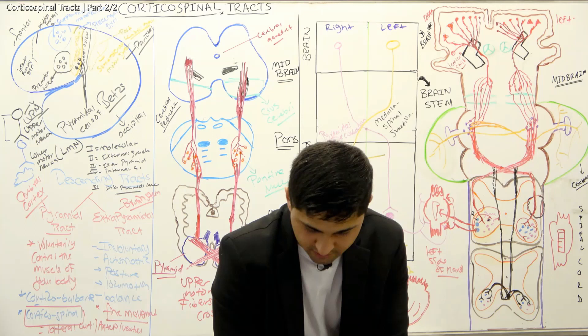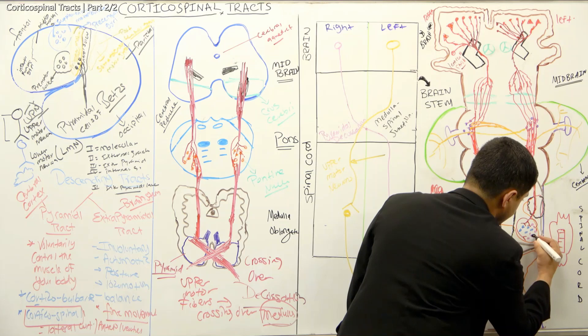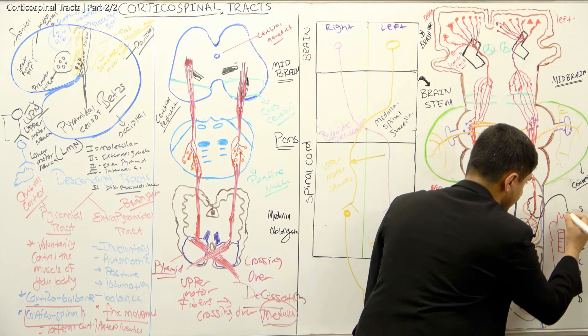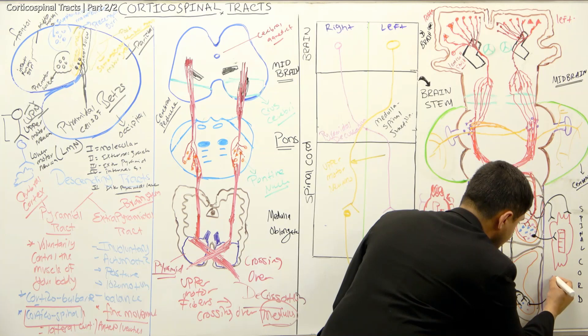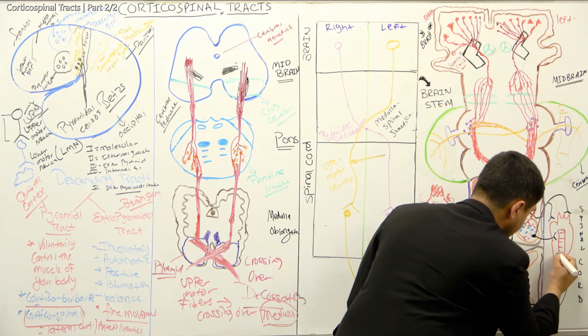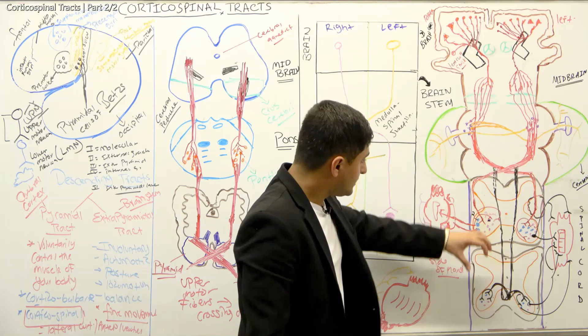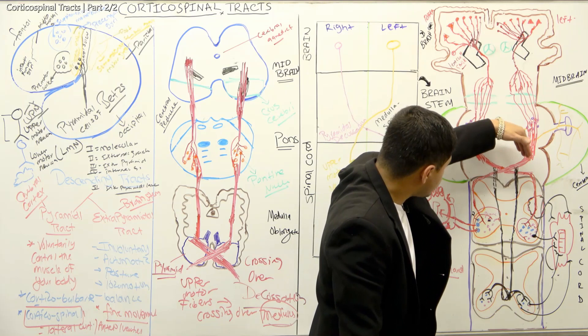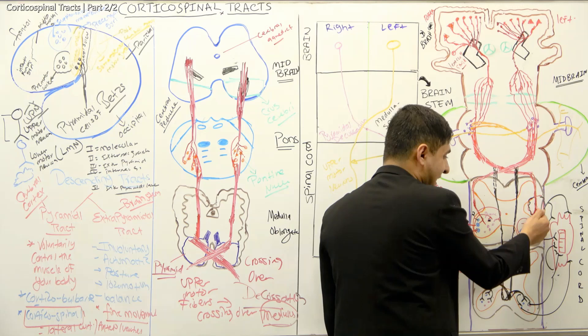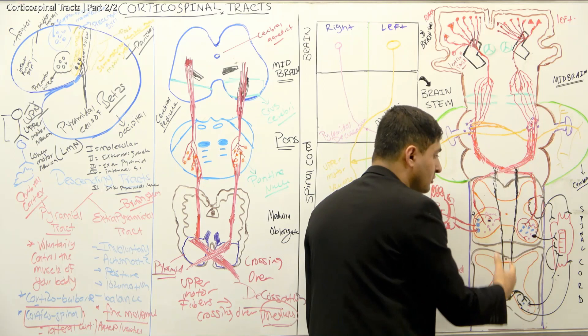To illustrate this: the lower motor neurons synapse on extrafusal fibers. The gamma motor neurons innervate the intrafusal fibers. So the fibers from the lateral column exit, synapse at alpha or gamma motor neurons, and those lower motor neurons then send action potentials out to innervate the skeletal muscles.